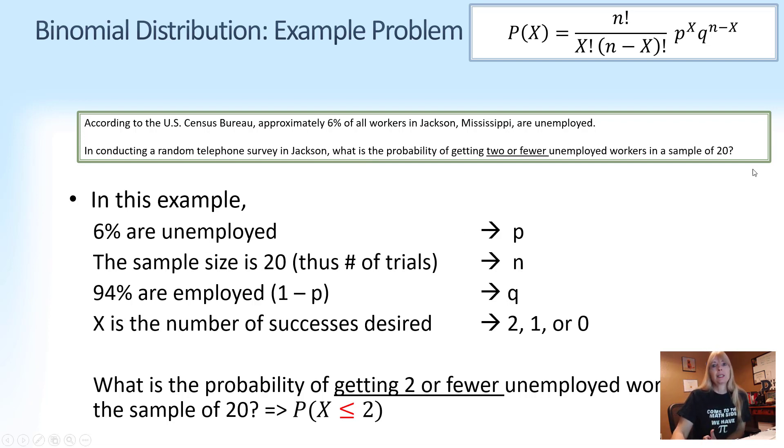It says we have a sample of 20. So 94% are employed. That far is pretty good. And X is the number of successes desired. It said 2 or fewer. So 2, 1, or 0.